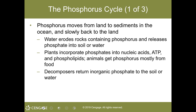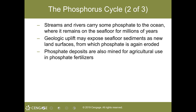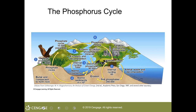The phosphorus cycle: water erodes rock containing phosphorus, releasing that phosphorus as phosphate into the soil or water. From there, plants can incorporate it into their nucleic acids and phospholipids, and then decomposers return the inorganic phosphate to the soil. The phosphate can then go into the ocean, where it remains in the sea floor for millions of years — all due to the weathering of rock.